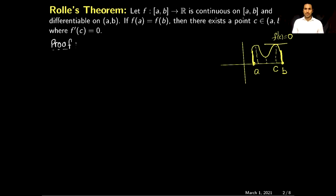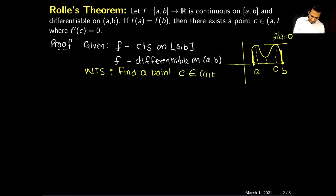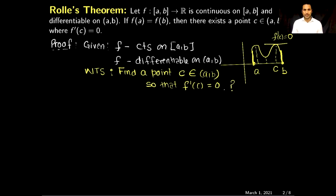First I will write down what is given, then what we want to show. Given: a function f which is continuous on the interval [a, b] and differentiable on the open interval (a, b). What we want to show is: we want to find at least one point c belonging to the interval (a, b) such that the derivative of the function at this point is equal to zero.